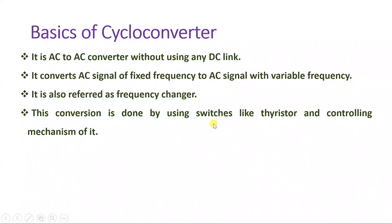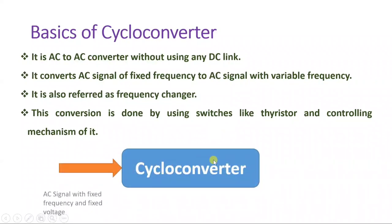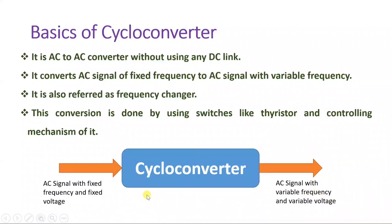In a cycloconverter, at the input side we have an AC signal with fixed frequency and fixed voltage, and at the output side we have an AC signal with variable frequency and variable voltage. Our agenda is to change frequency — either by increasing it using a step-up cycloconverter, or by decreasing it using a step-down cycloconverter.